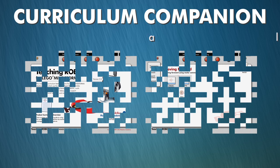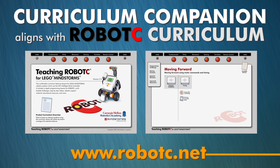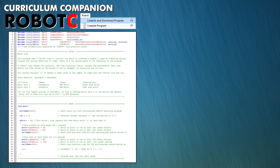The Curriculum Companion is designed to align with the existing Robot C curriculum, which is available at the Robot C website. Students begin by downloading their Robot C code to the Virtual World interface.